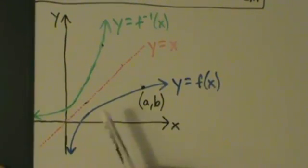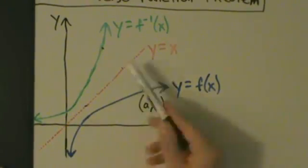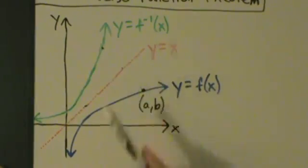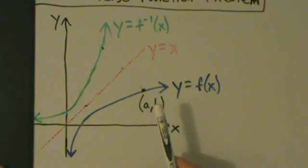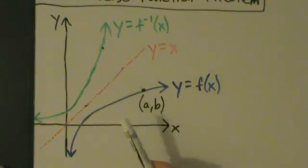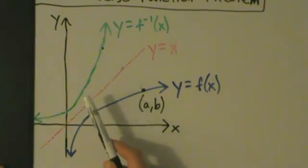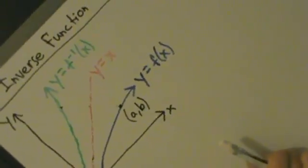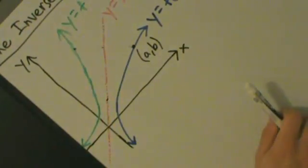Let's say we have a function y equals f of x, its graph kind of looks like this. Here's the point (a, b). This red dotted line here is y equals x, and this green curve over here is y equals f inverse of x — that's the inverse function for f of x. Remember that if a function has an inverse, then their graphs are reflections over the line y equals x. So the graph of the inverse function is just the reflection over y equals x — kind of like a mirror image.